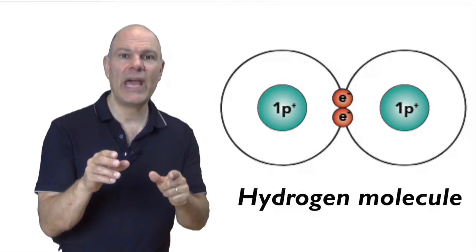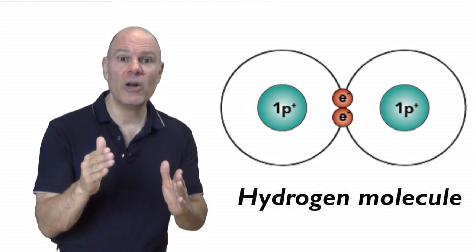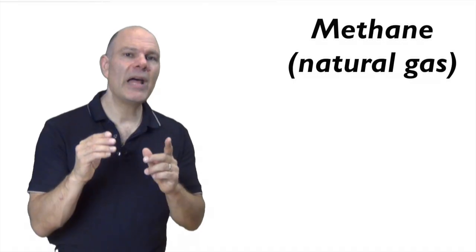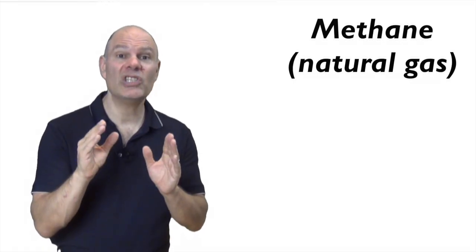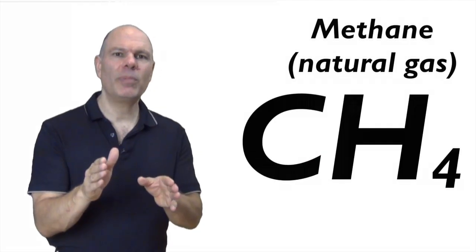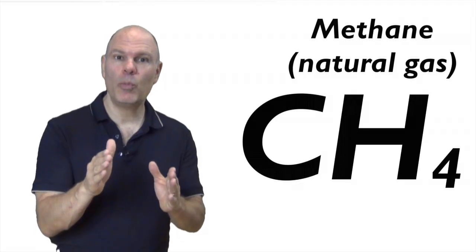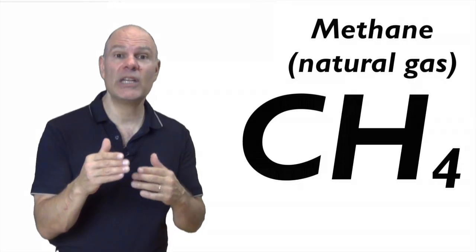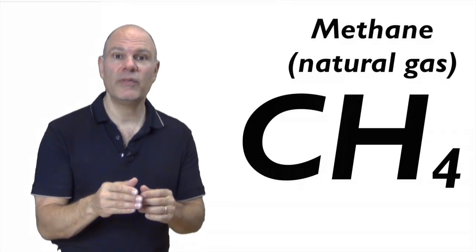A covalent bond is when atoms are bound together by one or more pairs of shared electrons. Let's look at a slightly more complex molecule — methane, also known as natural gas. Its formula is CH4: one carbon bonded to four hydrogen atoms. Methane is a very important fuel source, and it's also significantly involved in climate change.